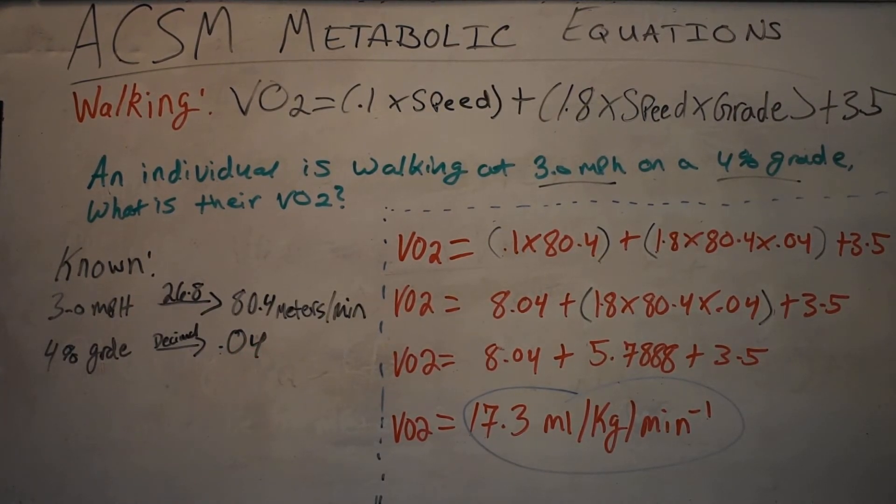After we have done that, we've done our 3.0 miles per hour into meters per minute and we've done our percent grade into decimal. Then what we can do is rewrite our equation. Rewrite VO2 equals 0.1 times 80.4, because remember the speed is in meters per minute.